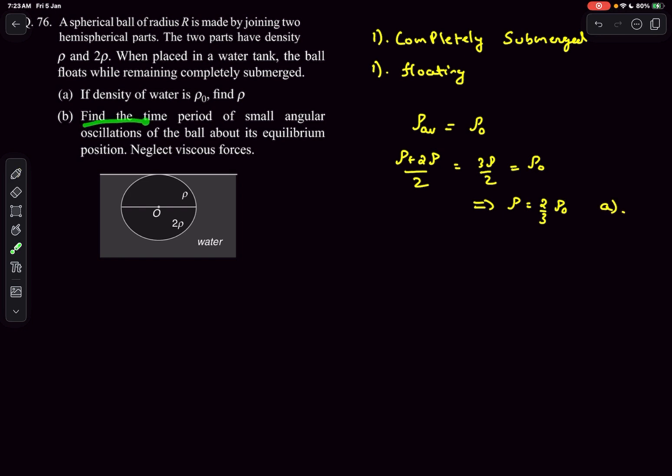In option B, they want us to find the time period of small angular oscillations of the ball about its equilibrium position. Now we are displacing this ball by a small angle of theta about its equilibrium axis, and we need to find the time period of angular oscillations. As most of you must have covered SHM, first we displace the body by an angle theta and then find out the restoring torque and the restoring alpha.